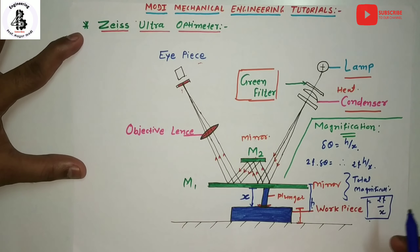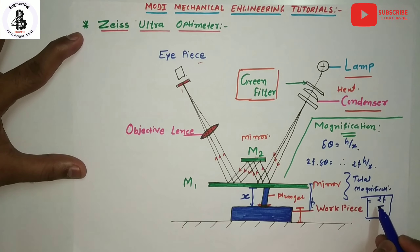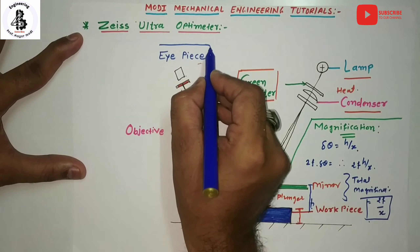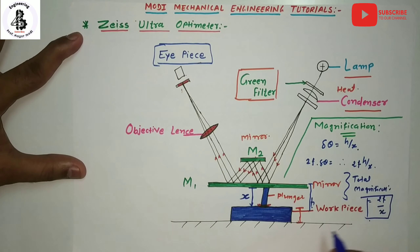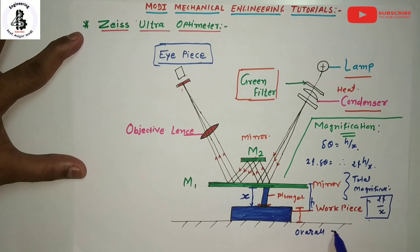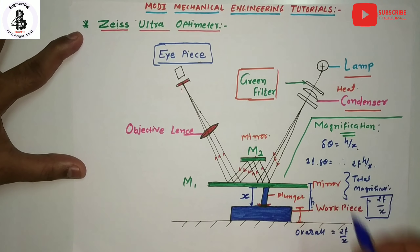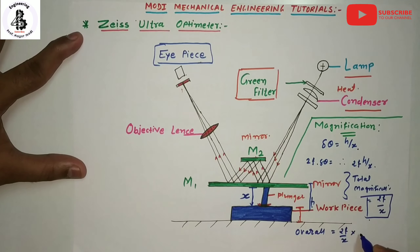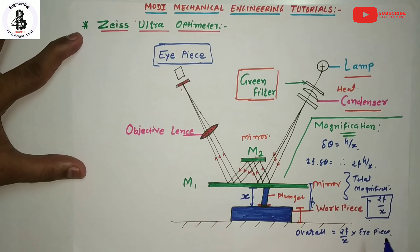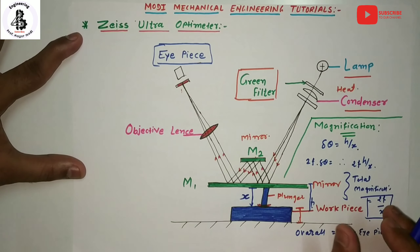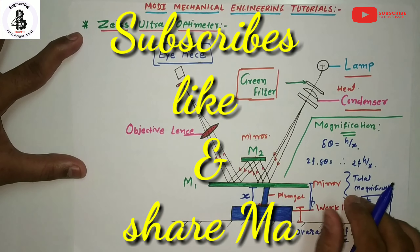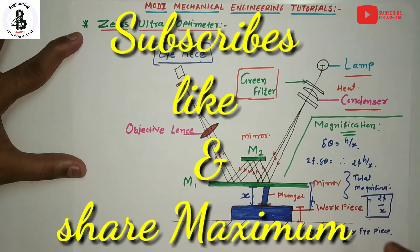The overall magnification of the Zeiss Ultra Optimeter is (2f / x) multiplied by the eyepiece magnification — that is, the magnification of the instrument multiplied by the magnification of the eyepiece. That is all regarding the Zeiss Ultra Optimeter, which is used for measurement of the dimensions of workpiece materials. If you like this, please subscribe and share — thank you very much.